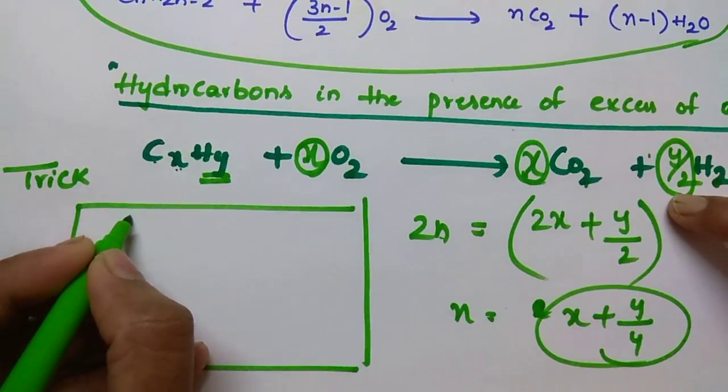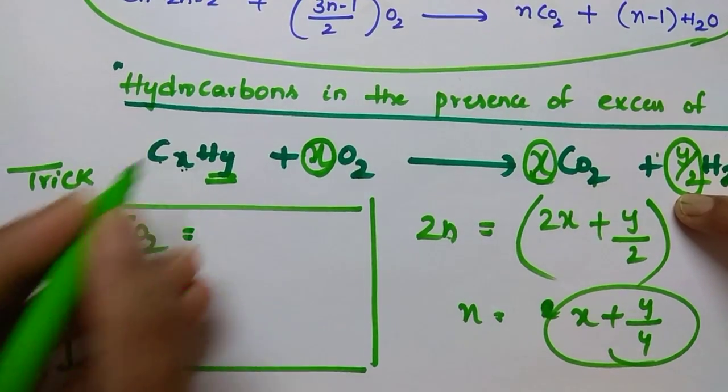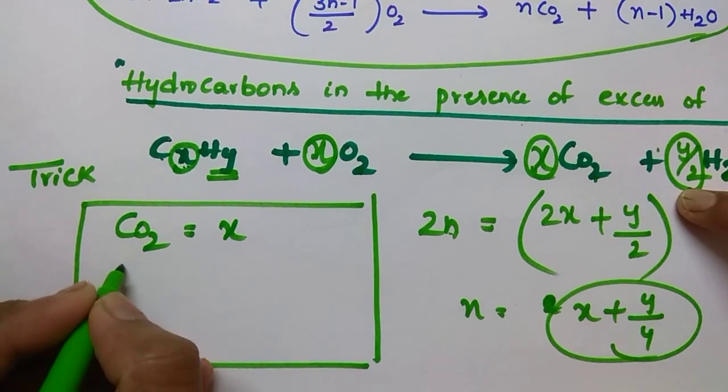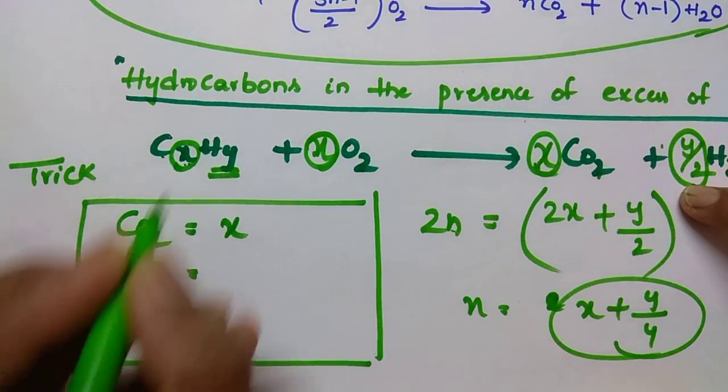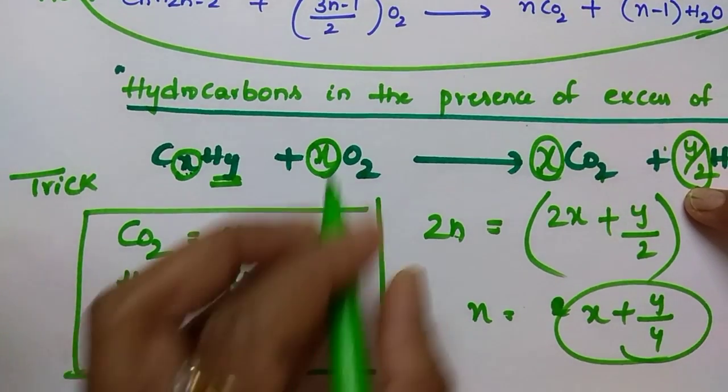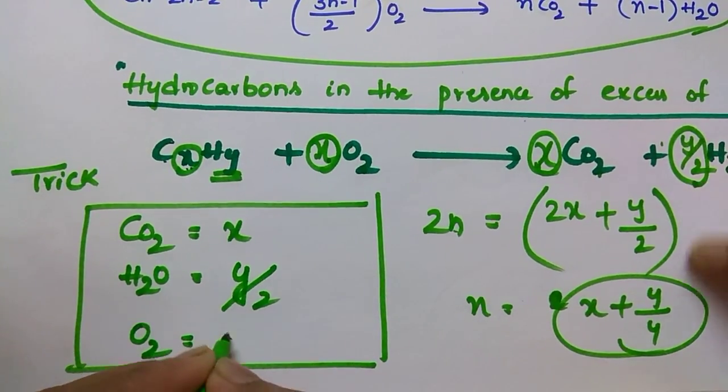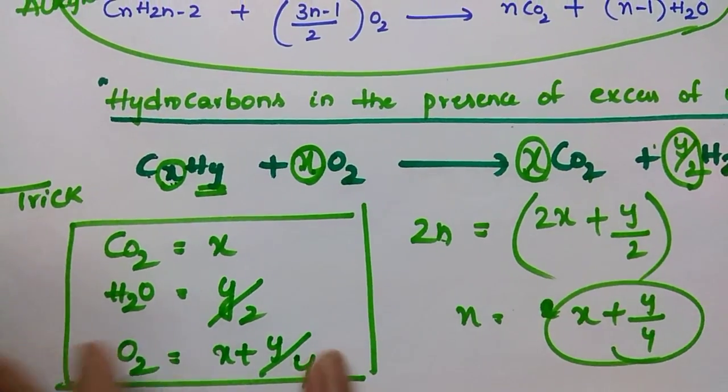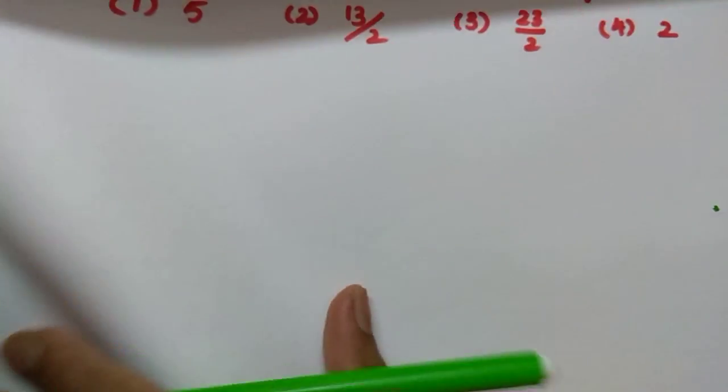Let us see what is the trick, students. To balance number of CO2s, just take x. To balance number of water molecules, simply take y by 2. And to balance number of oxygens, what is the formula? x plus y by 4. That's it. For example, if you want to balance: